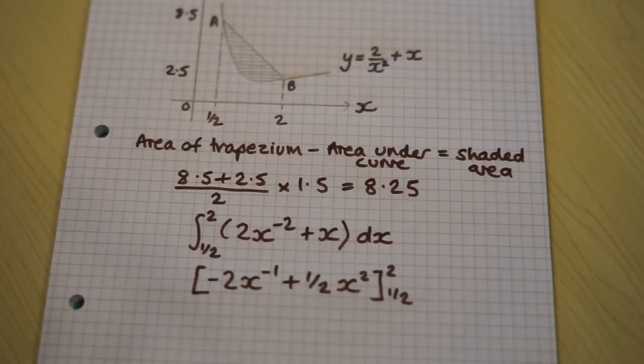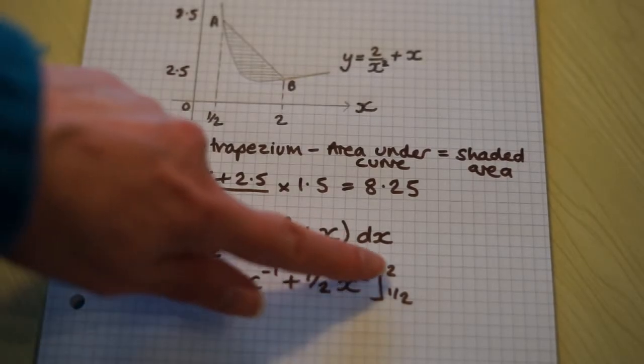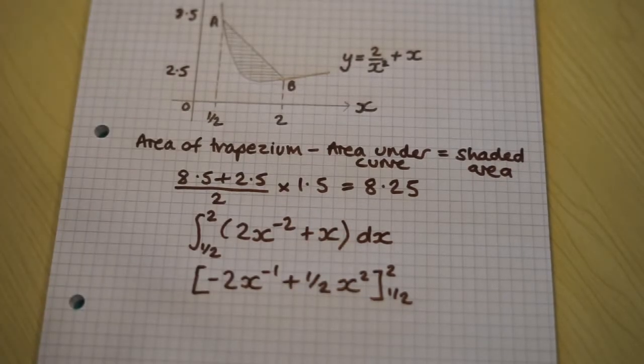So we've integrated, and now we just need to substitute 2 in, and then take away the value when half is substituted in.